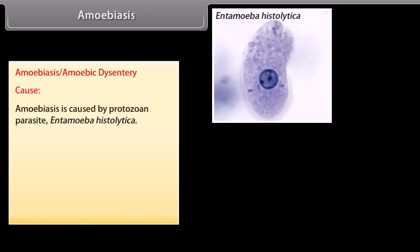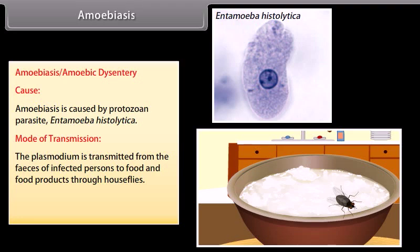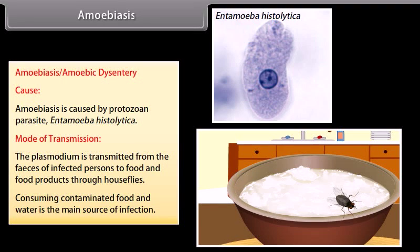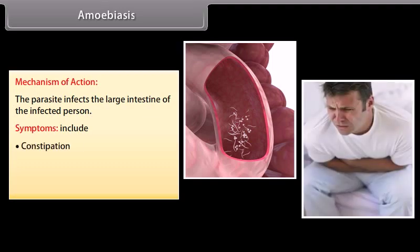Amoebiasis, or amoebic dysentery, is caused by the protozoan parasite Entamoeba histolytica. It is transmitted from the feces of infected persons to food and food products through houseflies. Consuming contaminated food and water is the main source of infection. The parasite infects the large intestine. Symptoms include constipation, abdominal pain and cramps, and stool with mucus and blood.